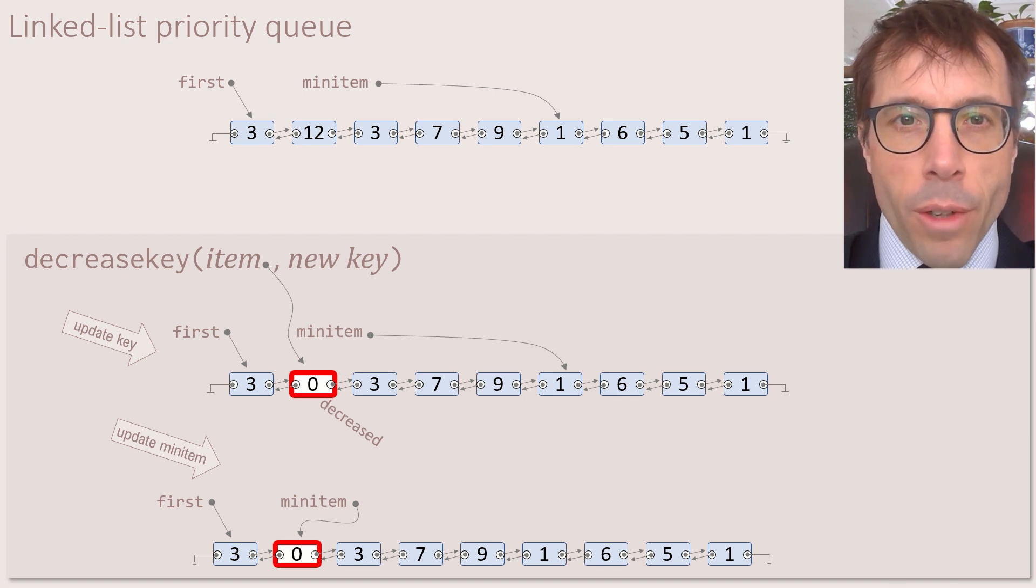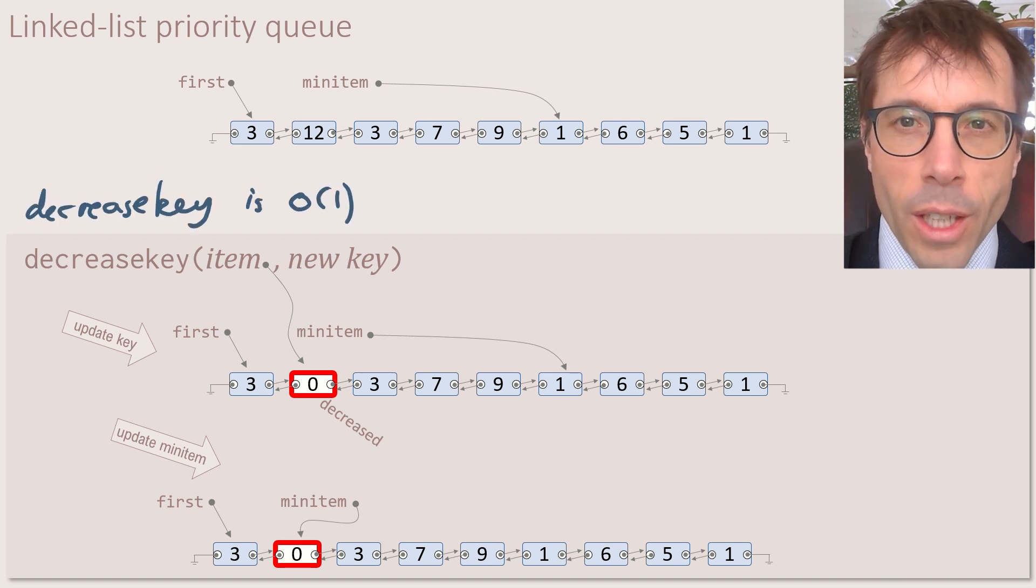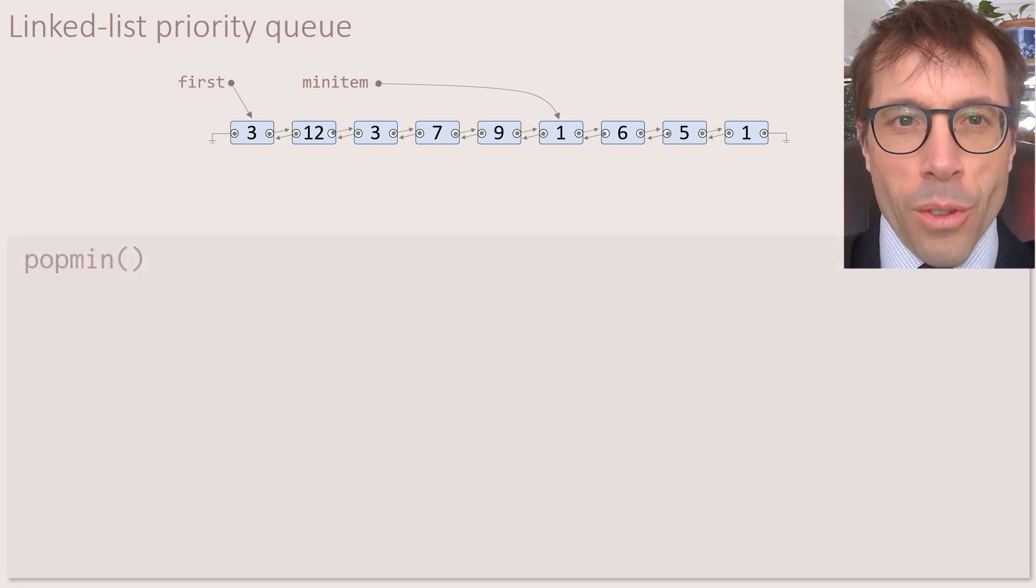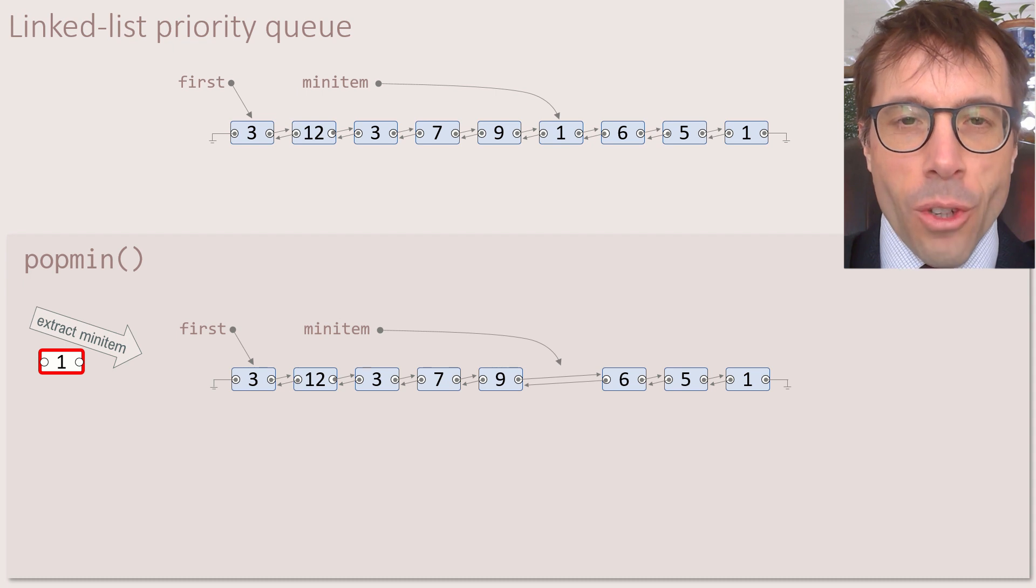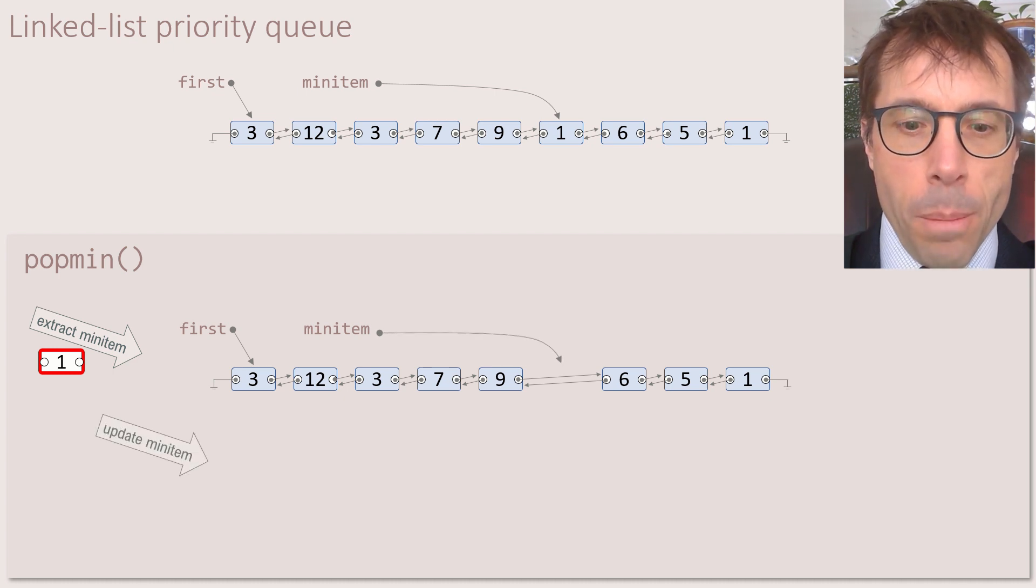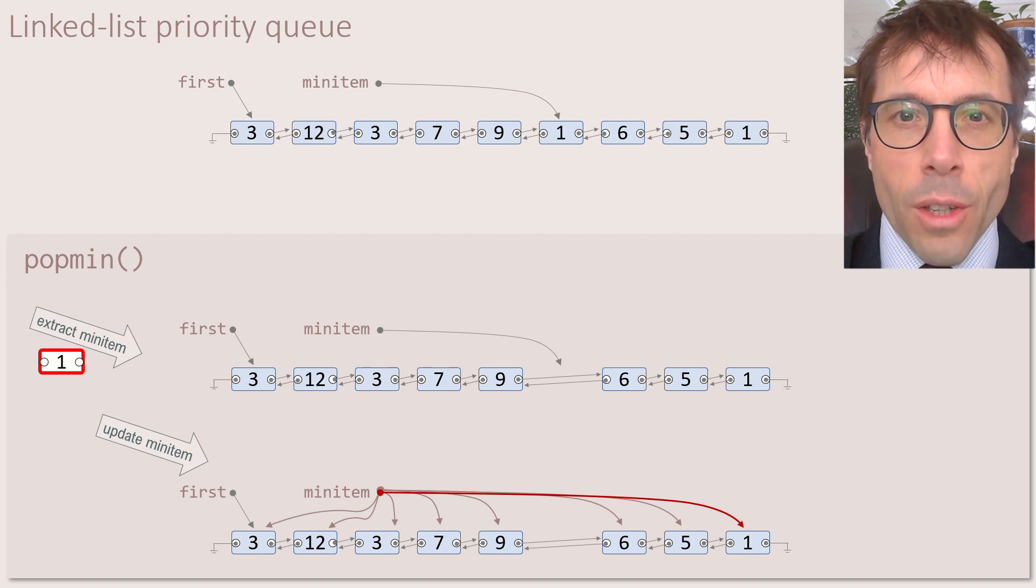Anyway, back to our blazingly fast priority queue implementation. This decrease key is obviously O of one. So what's the problem? Problem is obviously pop min. It's very fast to pull the minimum item out from the list, thanks to the min item pointer. This is just big O of one. But it's very slow to restore our data structure to a valid state in which min item points to the correct place. It has to scan through the entire list. And this is big O of n.